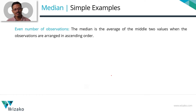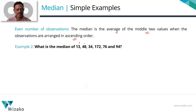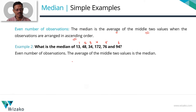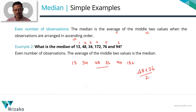What if we had an even number of numbers? Write those numbers in ascending order — no change there. The only difference is you pick the middle two values and compute their average to find the median. For example, with six numbers in ascending order: 13, 34, 48, 76, 94, and 172 — the middle two numbers are 48 and 76. The arithmetic mean of 48 and 76 is 124 divided by 2, which equals 62. So the median is 62 for this set of data.